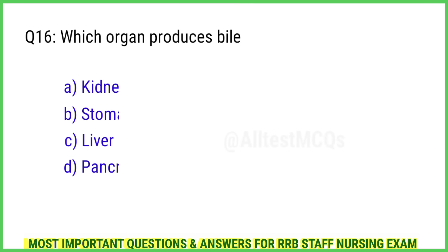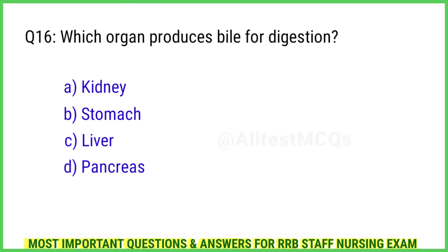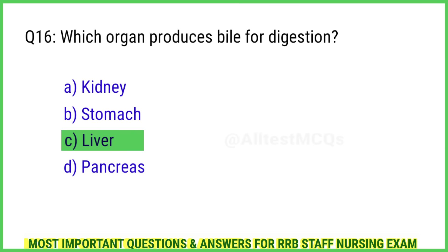Question 16. Which organ produces bile for digestion? The right answer is Option C: Liver.